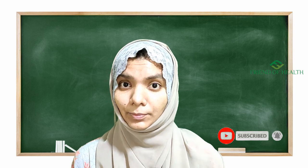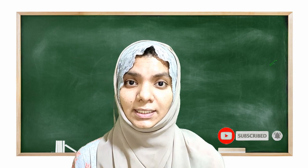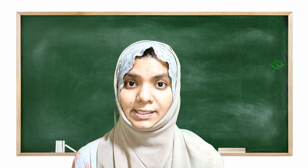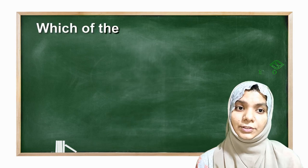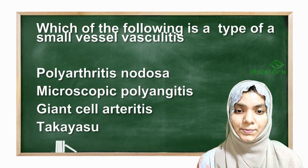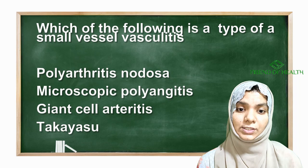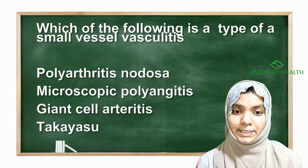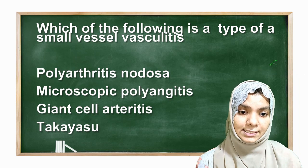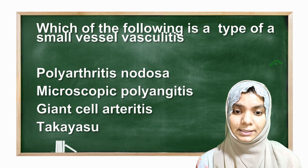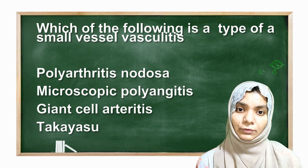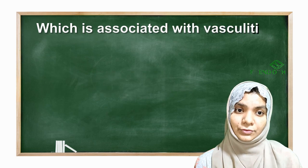Before going into the mnemonic, let us see some questions that have come in various competitive examinations. Which of the following is a type of small vessel vasculitis? Option A is polyarteritis nodosa, option B is microscopic polyangiitis, C is giant cell arteritis, and D is Takayasu's arteritis.